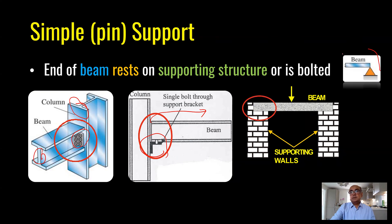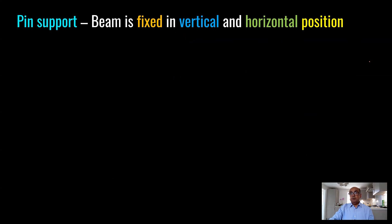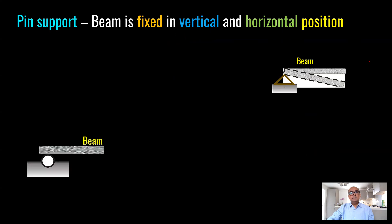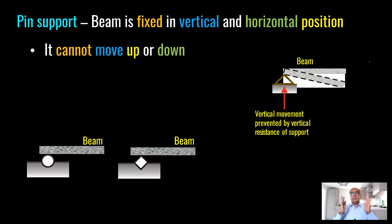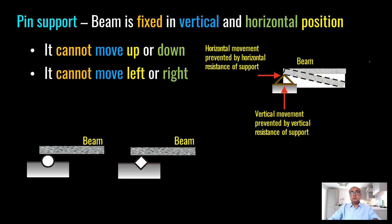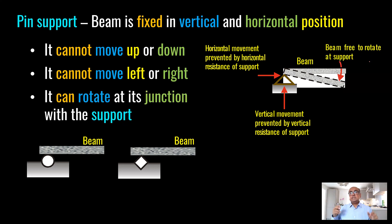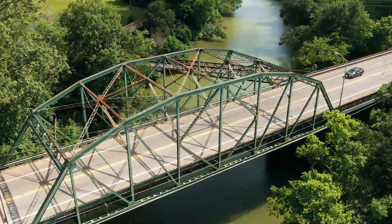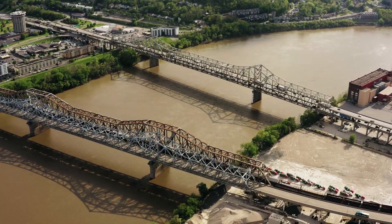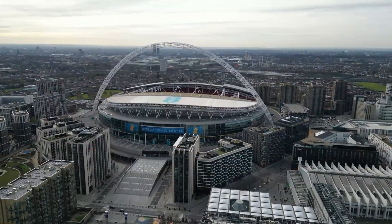We represent a pin joint with a triangle symbol. A pin support fixes the beam in vertical and horizontal position but allows rotation — this means a pin support cannot take any moment. The most common application in civil engineering is trusses — triangular shapes used to resist loading in bridges and buildings — the most efficient way to resist loading.